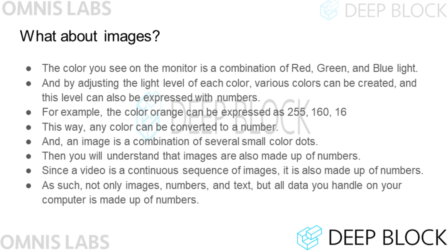How are images stored on the computer? The colors a person sees on a monitor are combinations of red, green, and blue light. Physically, all colors except black can be expressed by combining three light intensities, and black can be expressed if the monitor does not emit light. The intensity of one light on a monitor can be expressed as a number. For example, orange can be expressed as red light 255, green light 160, and blue light 16. In this way, color information is also converted into numbers and stored in the computer.